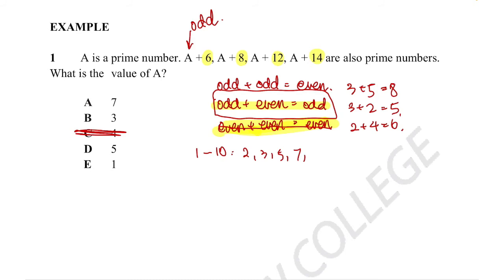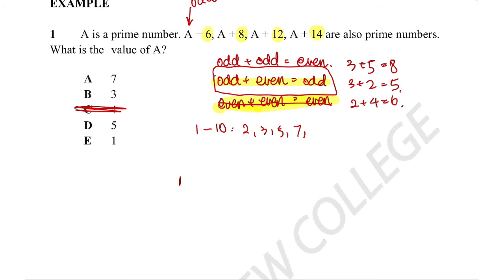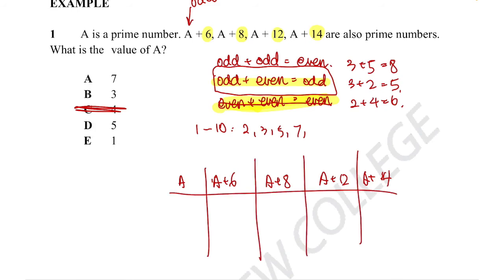A table would represent this well. We're looking at A, A + 6, A + 8, A + 12, and A + 14, with values 1, 3, 5, and 7 to test. When A = 1: A + 6 = 7, A + 8 = 9, A + 12 = 13, A + 14 = 15.